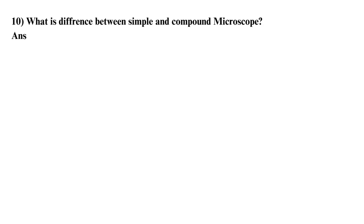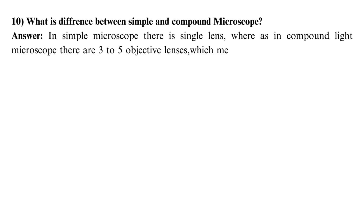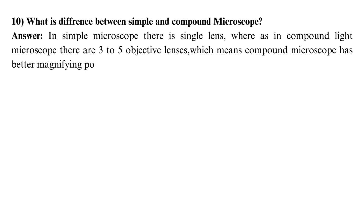What is the difference between a simple and a compound microscope? In a simple microscope there is a single lens, whereas in a compound light microscope there are three to five objective lenses, which means the compound microscope has better magnifying power.